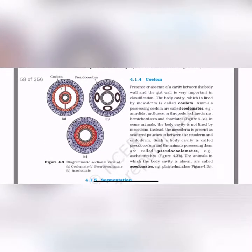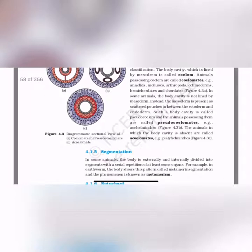In summary: the first type is coelomate — presence of true coelum. The second type is pseudocoelomate — the coelum is present in the form of pouches, which is incomplete. The third type is acoelomate — there is no body cavity at all.